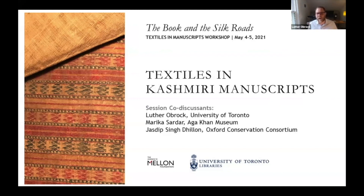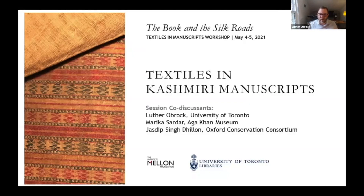Justeep Singh Dhillon has been a book and paper conservator at the Oxford Conservation Consortium since 2017. In addition to working at the consortium, he takes a deep interest in the history of South Asian manuscripts and printed books, especially those originating from the Sikh tradition. He helps run a charitable organization called the Potiseva for the conservation of Sikh religious books and manuscripts. He's also interested in the history of papermaking, which has led him to study for a PhD at SOAS, the University of London.